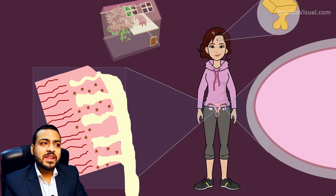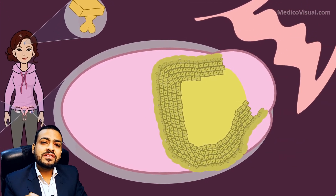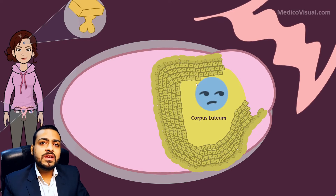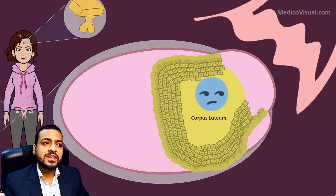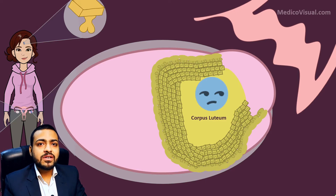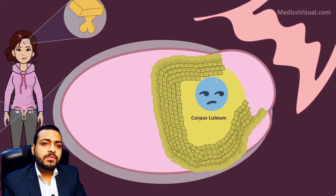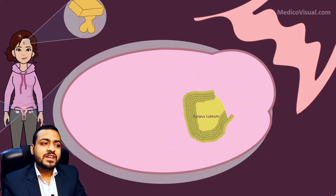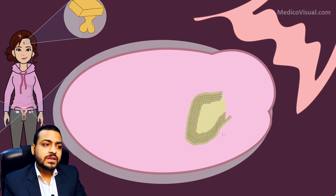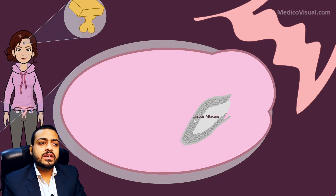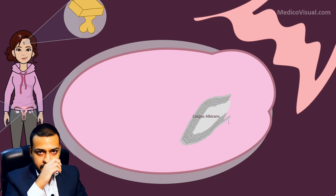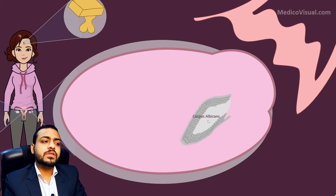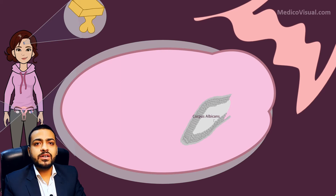As the oocyte is eaten up by macrophages, there is no good-news message and no secretion of HCG into the blood. This poor corpus luteum keeps waiting for HCG, but of course HCG will not come. After about 10 or 11 days it degenerates and is ultimately converted into a whitish scar tissue called corpus albicans — corpus meaning body, albicans meaning white.